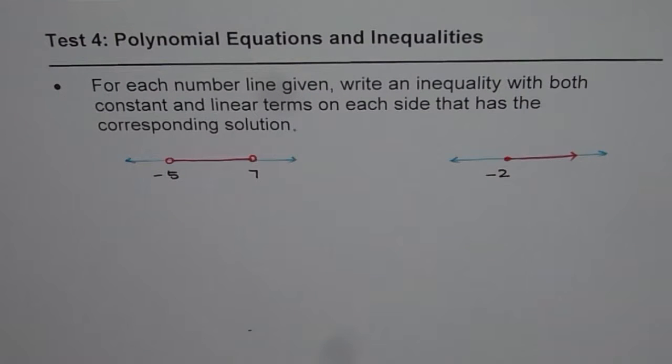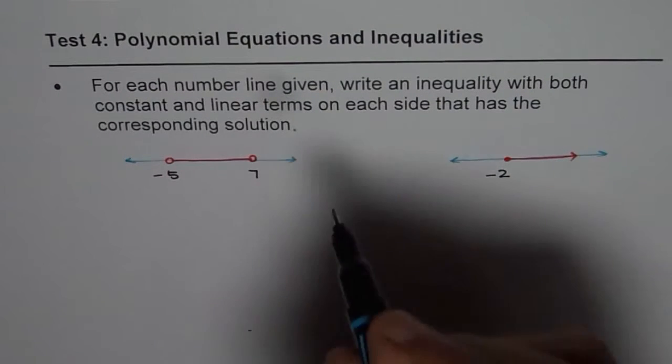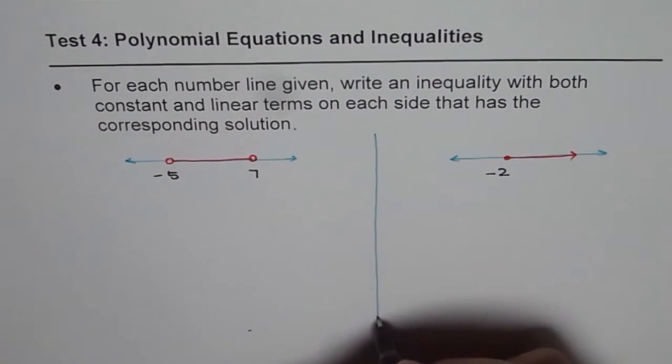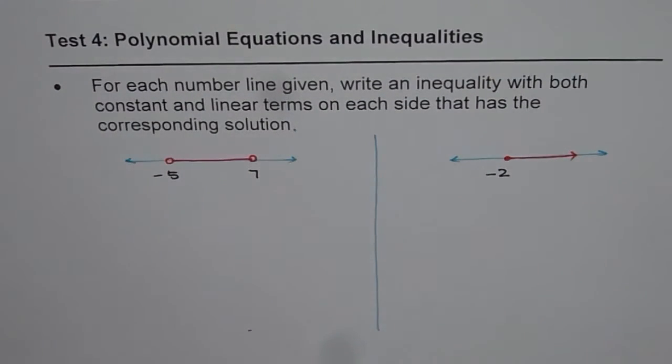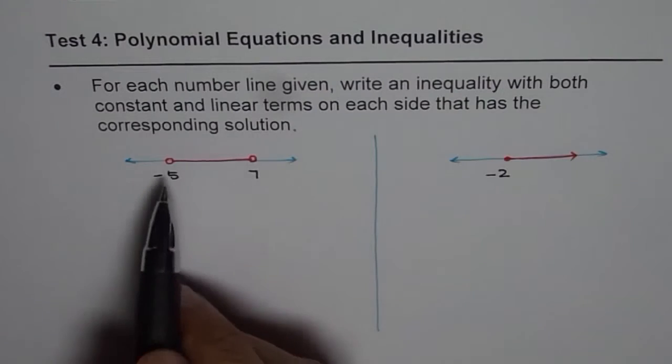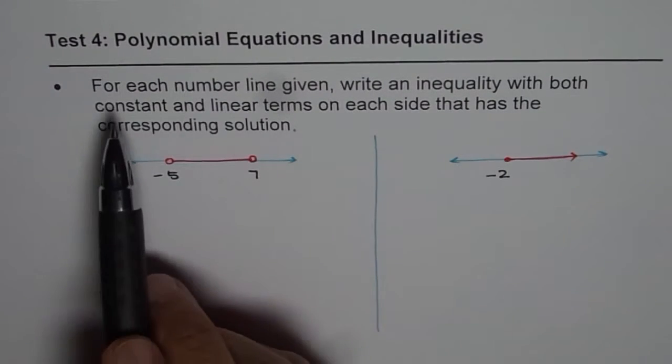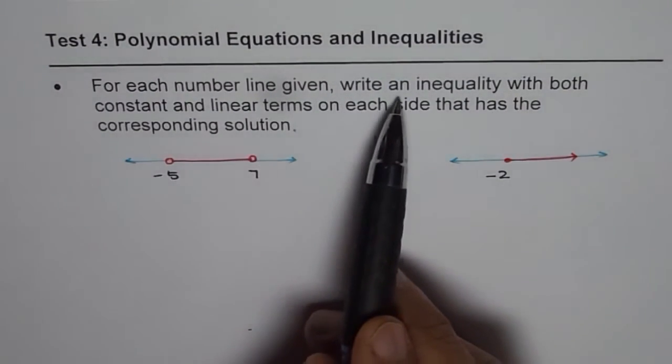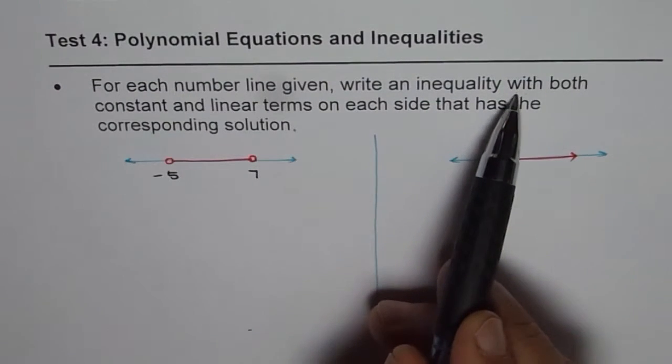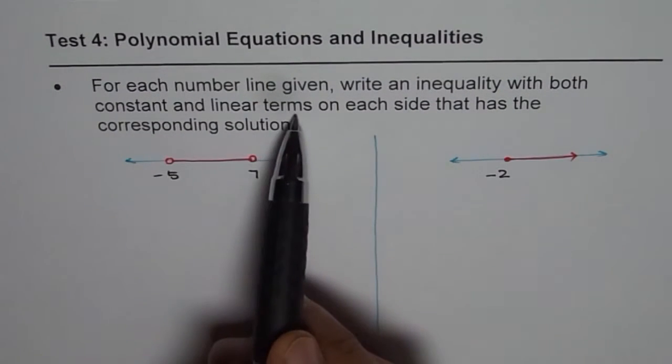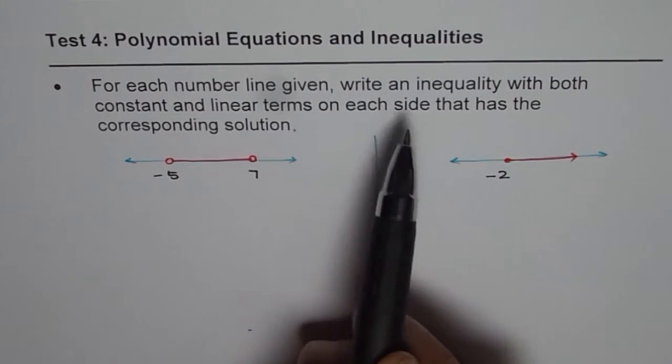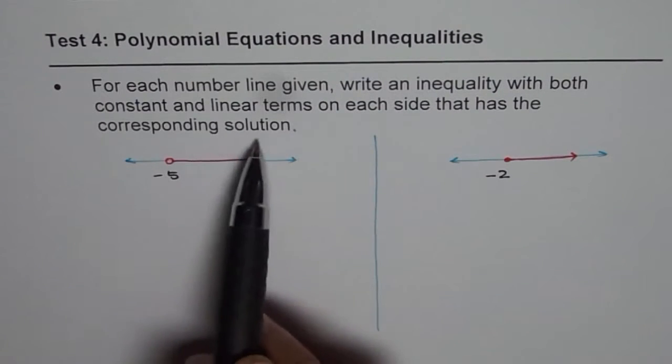Now, you need to write two inequalities, rather double inequalities as the question suggests. So, since we have a solution like this, for each number line, write an inequality with both constant and linear terms. So, we should have terms which are both constant and linear on each side that has the corresponding solution.